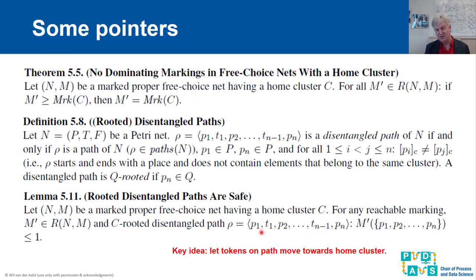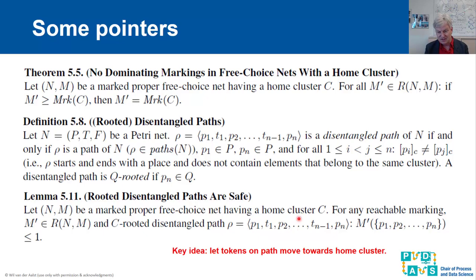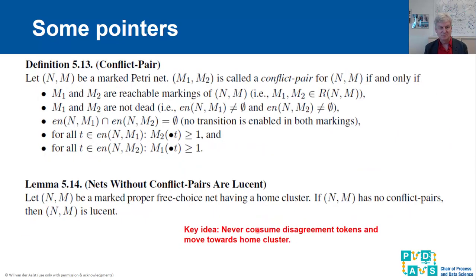How does one prove this lemma? It is quite straightforward. Suppose there would be two tokens on such a C-rooted disentangled path. Let those tokens move towards the home cluster — they can never disappear, and that leads to a contradiction since C is a home cluster.